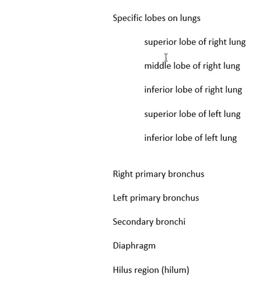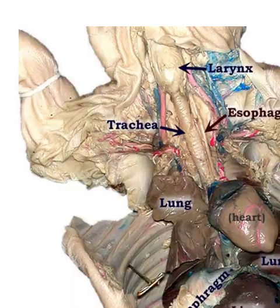The right lung has superior, middle, and inferior lobes, but the left has only superior and inferior — fairly easy. Know the difference: bronchus is singular, bronchi is plural, and bronchiole is a tiny bronchial tube.